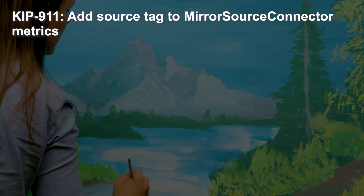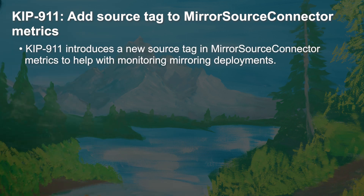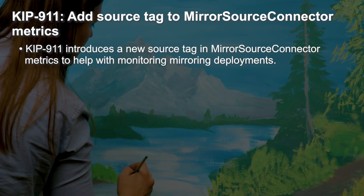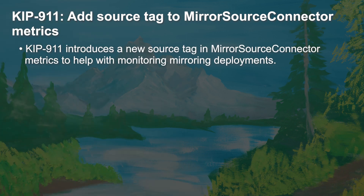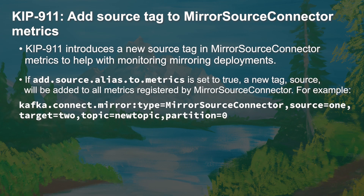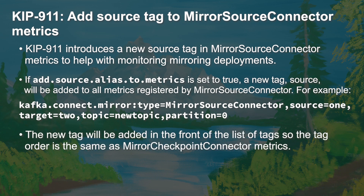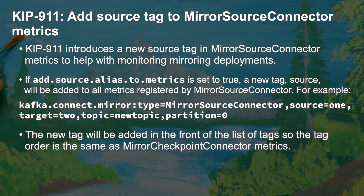Our final Kafka Connect update is from KIP 911. To help monitor mirroring deployments, this KIP adds a new source tag for the metrics generated by the mirror source connector. By setting add.source.alias.to.metrics to true, a new tag with the name of the source cluster will be added to the front of the list of existing tags.